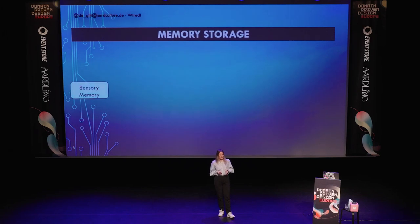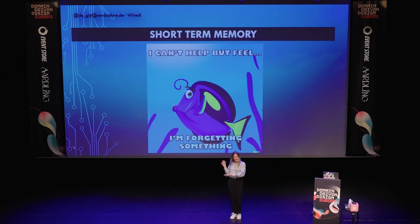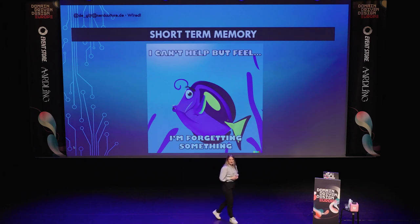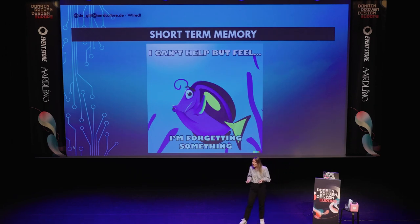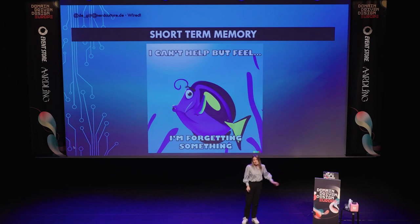From sensory memory, it's a logical step to our short-term memory. Short-term memory is a place where things end up when we pay attention to them. We've all seen the cute little fish Dory from Finding Nemo. She's helpful, kind, friendly, super happy — but she has one tiny issue: she cannot remember anything you said to her past the here and now. You can have a conversation with her, but if you want to refer to something that happened before, she has no recollection of it. And that looks a little bit like our short-term memory.